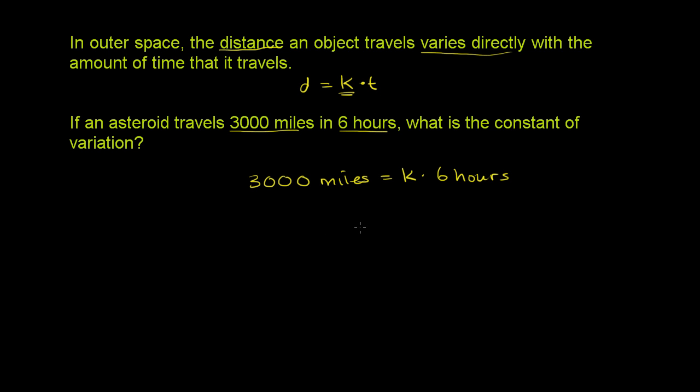If we want to solve for the constant of variation, we can just divide both sides by six hours.